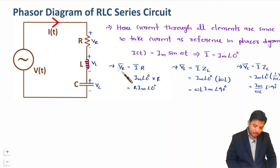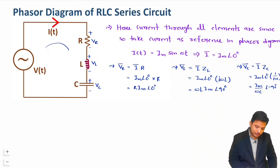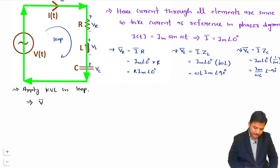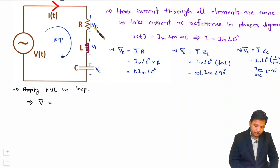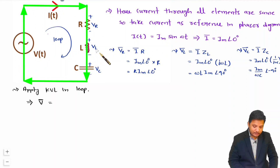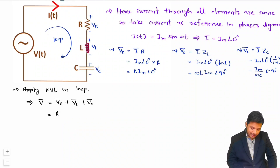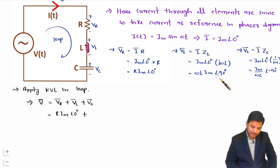Now we have the voltages of all elements in phasor form. Applying KVL in this loop, the total voltage in phasor form V-bar = VR-bar + VL-bar + VC-bar. Substituting the values: VR = R·Im∠0°, VL = ωL·Im∠90°, and VC = (Im/ωC)∠−90°.